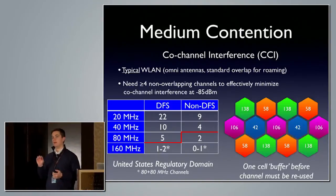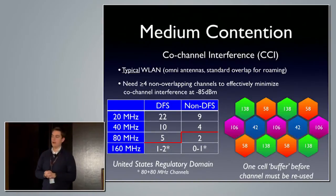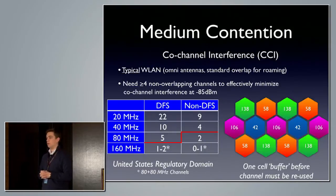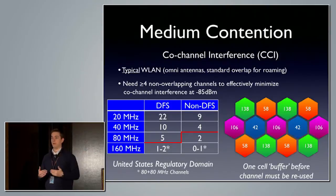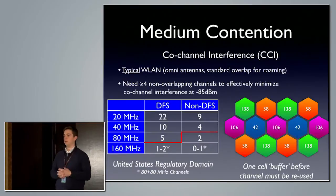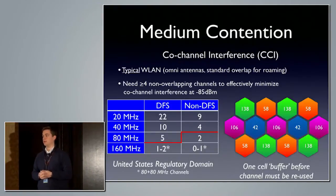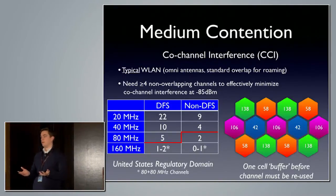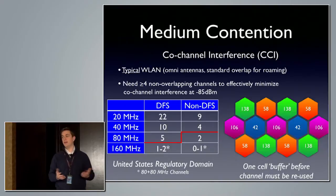The typical rule of thumb — which you should definitely design to confirm — is that in an enterprise network with typical omni antennas, you need around four access points or more on non-overlapping channels in order to have a viable channel plan. From a baseline expectation, if you're looking at a typical enterprise environment, try to achieve at least a minimum of four non-overlapping channels. The problem is our spectrum inventory: 2.4 GHz only gives us three, so immediately you can't achieve that. And in 5 GHz, we have the opposite situation where people enable 80 MHz channels and go from 9 or 12 non-overlapping channels down to 2 or 4.